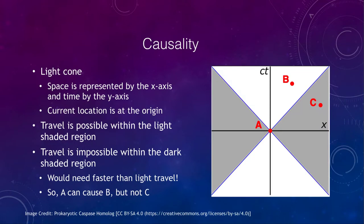Now, let's look a little bit about what we mean by causality. What we're looking at here is an example of a light cone. We have space on the x-axis, time on the y-axis, and our location is always at the origin. So it shows what was possible in the past and what is not possible. So where could we have been? The light shaded areas are areas where it is possible to travel.